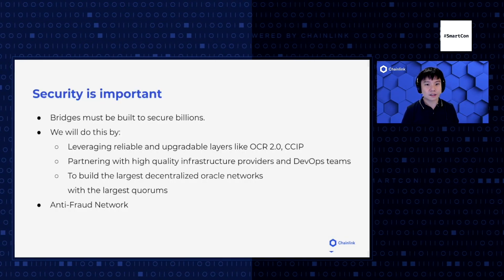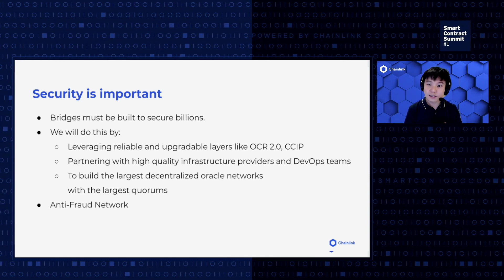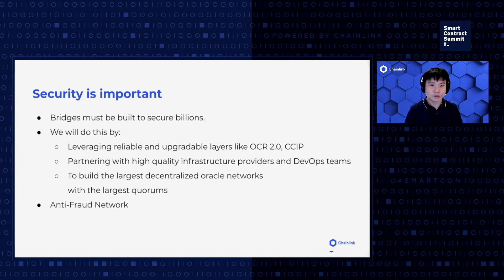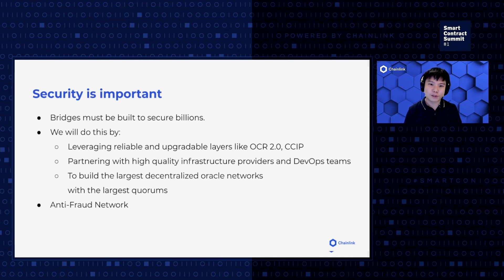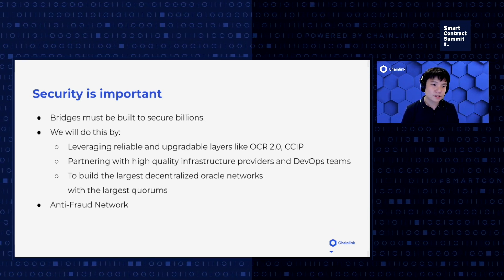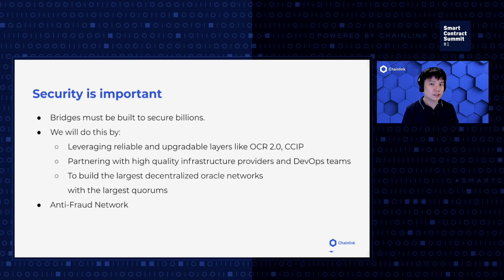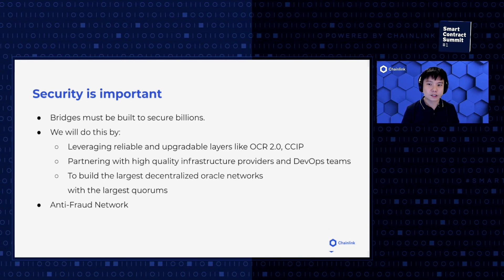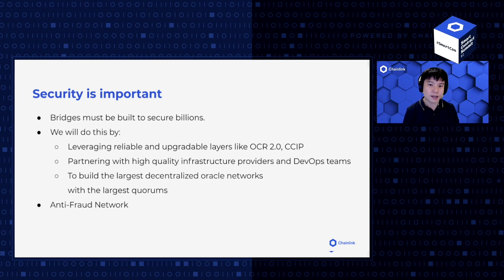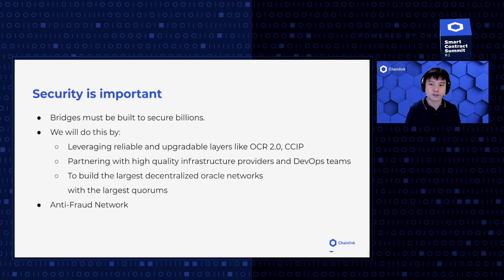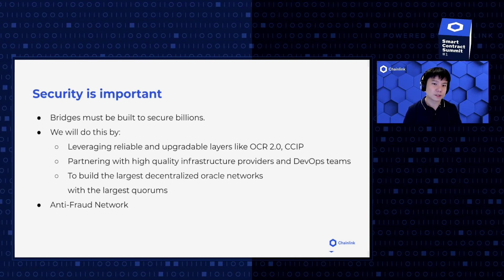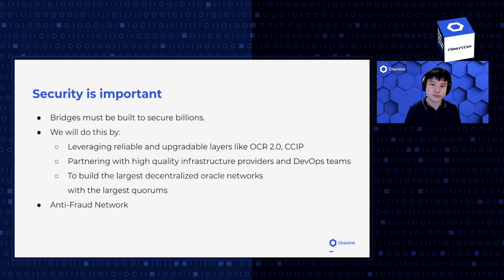Although Chainlink enables developers to build fast, what's important for the ecosystem is that we can all go far. The programmable token bridge service has to be built to secure a massive number of tokens. We're going to do this by leveraging all the lower layers of the cross-chain stack, including OCR 2.0 and CCIP. We are going to continue to work with the highest quality infrastructure providers and DevOps teams, running Chainlink DONs with the largest quorums to date to increase decentralization and remove single points of failure.